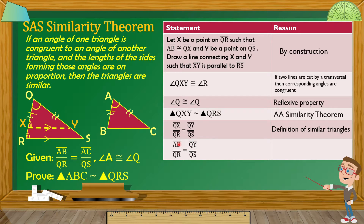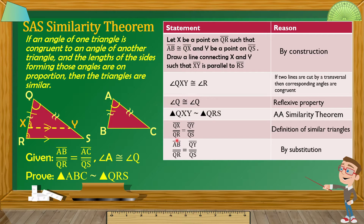Next: segment AB over segment QR is equal to QY over QS. Why? By substitution — in our first statement, we said segment AB is congruent to segment QX, so we can replace QX with AB. That is why QX becomes AB here, by substitution.